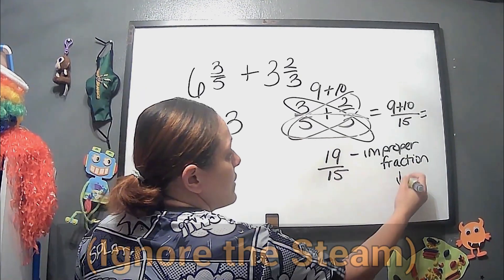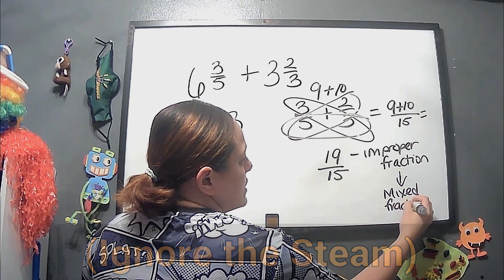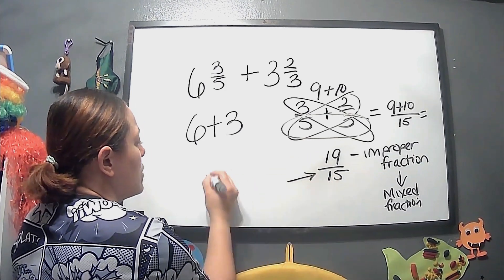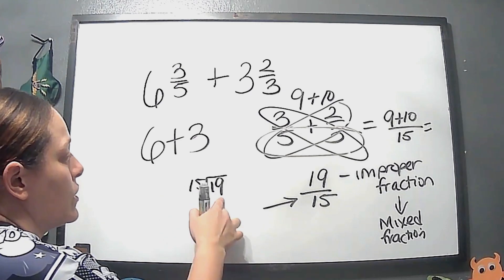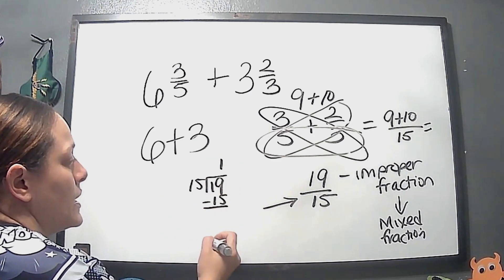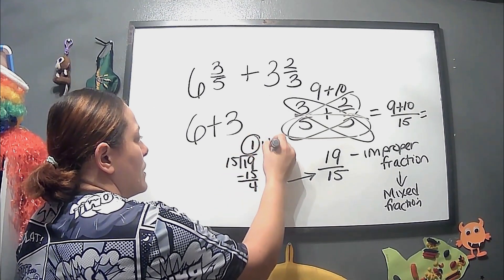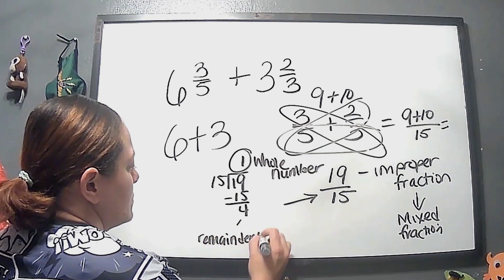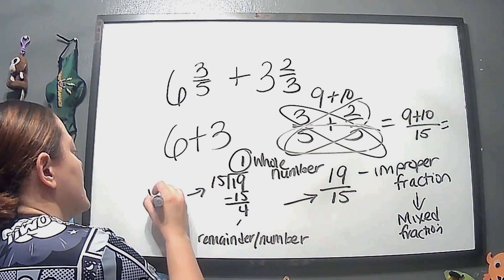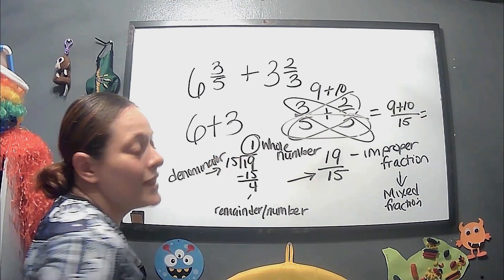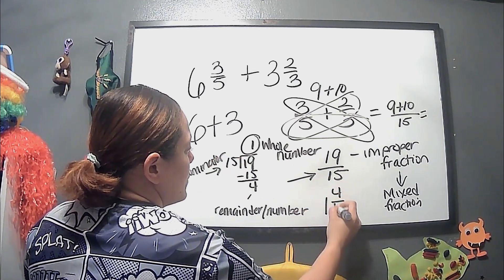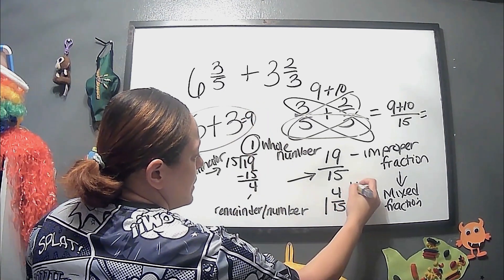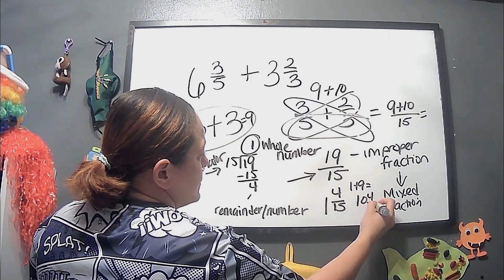So we get 19 over 15. We have to make this improper fraction into a mixed fraction. Think about how many wholes of 15 go into 19 — 15 goes into 19 one time, and we're left with 4. That remainder is the numerator and 15 is the denominator, giving us 1 and 4 over 15. We add that to the 9 from the whole numbers: 1 plus 9 equals 10, so our answer is 10 and 4 over 15.